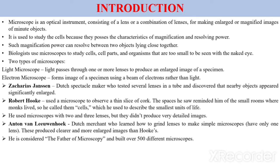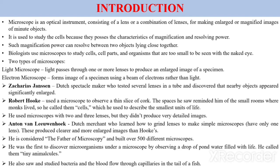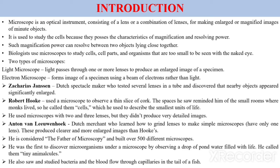Antoine Van Leeuwenhoek was a Dutch merchant who learned how to grind lenses to make simple microscopes with only one lens, producing clearer and more enlarged images than Hooke's. He is considered the father of microbiology, having built around 500 different microscopes. He was the first to discover microorganisms under the microscope using a drop of pond water, calling them tiny animal molecules. He also observed different blood cells under the microscope.